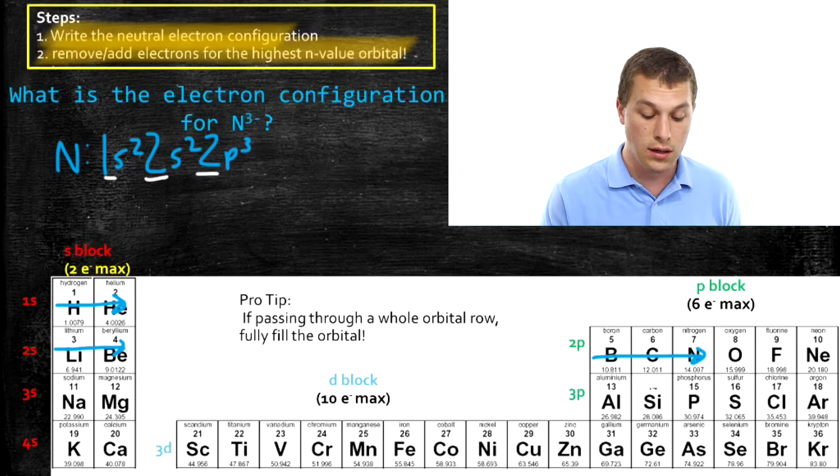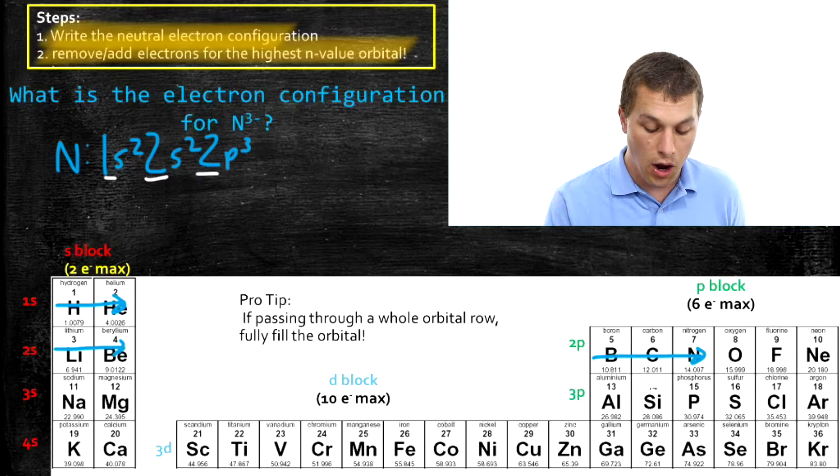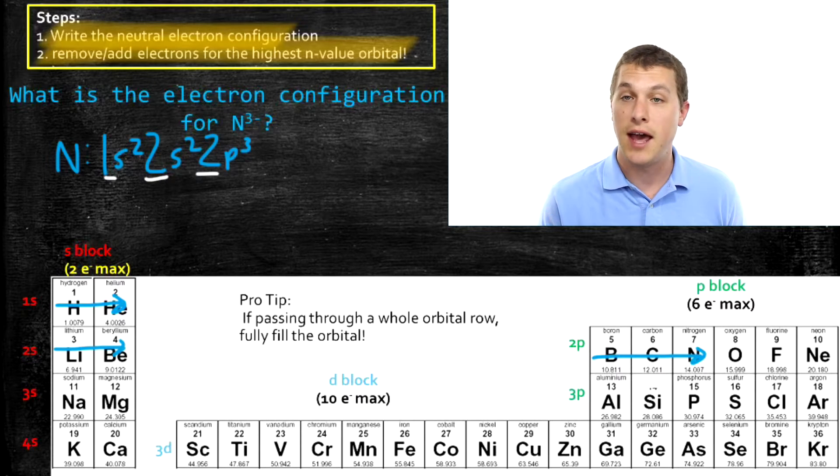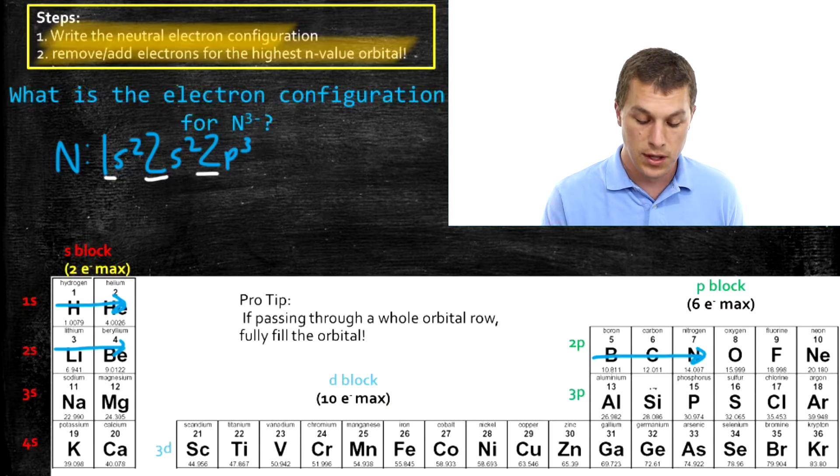So right now we have an n value of 1 for that very first one, the 1s2. An n value of 2 for 2s2. And an n value of 2 for 2p3. And all we're going to do now is decide, do I need to add electrons or remove them?